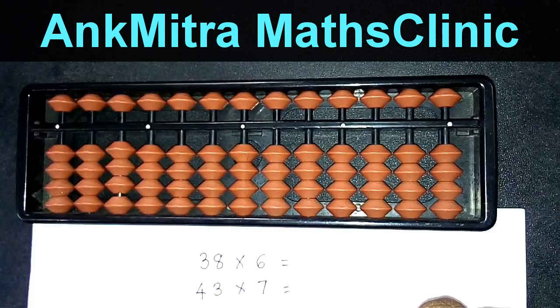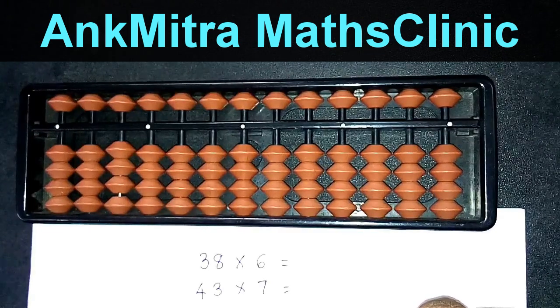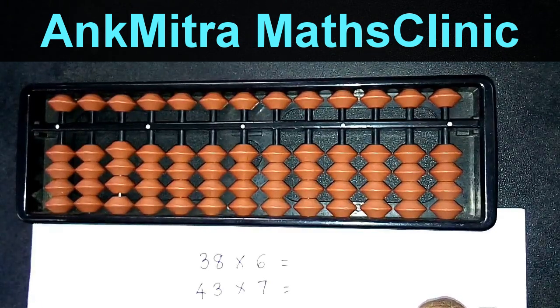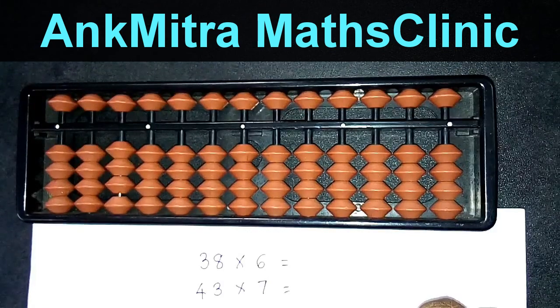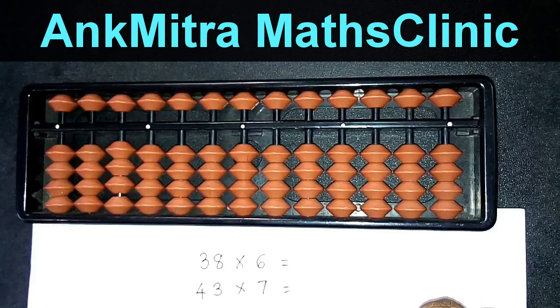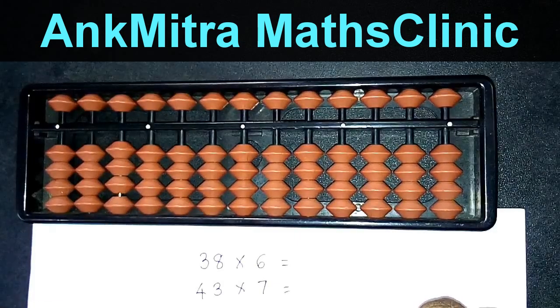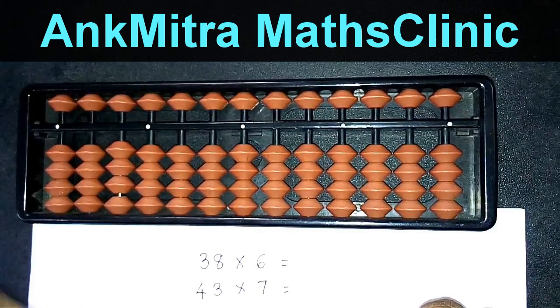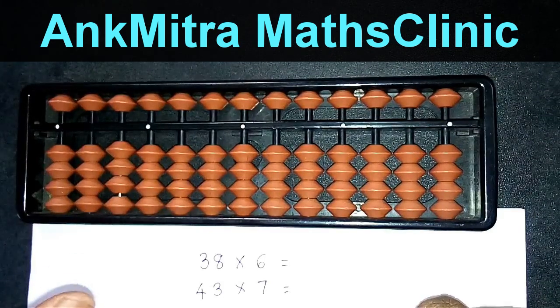So 2 threes are will be mentioned as 06, 3 ones are will be mentioned as 03, 4 twos are will be mentioned as 08. So we need to ensure that each answer of a table up to any random table up to 9 is always a two-digit number. So 7 ones are will also be called 07 and not just 7.